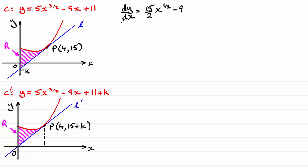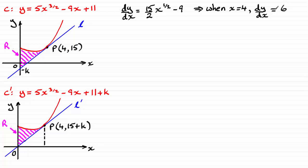Now we need to work out the gradient of the tangent at the point when x equals 4, the x-coordinate of P. When x equals 4, substituting that value into dy/dx, you get the square root of 4 — that's 4 to the power half — which is 2. So 15 over 2 times 2 is just 15. Take away the 9 gives us a positive gradient of 6, which is what we'd expect.